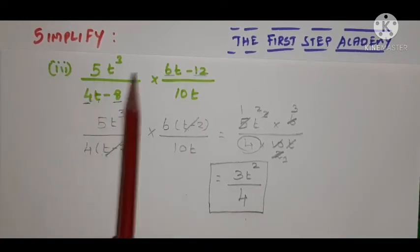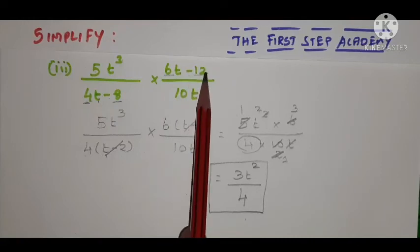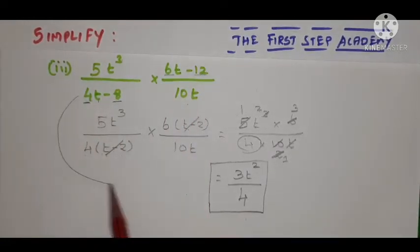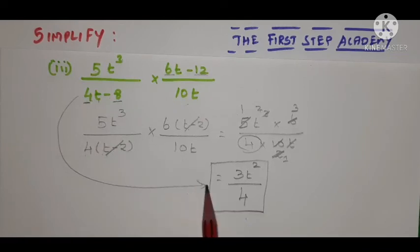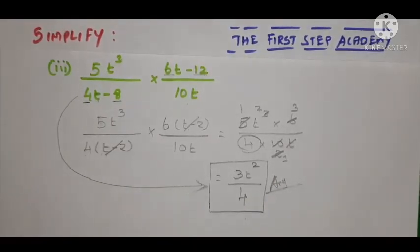The problem is 5t³/(4t - 8) × (6t - 12)/10t. We need to simplify this. The simplified value is 3t²/4. This is the answer. Hope you understand how we solve. Thank you very much.